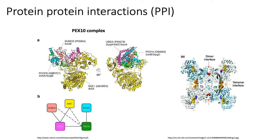For tetramers, you can have a homotetramer where four identical domains interact, or a heterotetramer where four or at least two different domains are interacting at the same time. Part B of this diagram basically illustrates a plausible interaction network between the domains shown in part A.